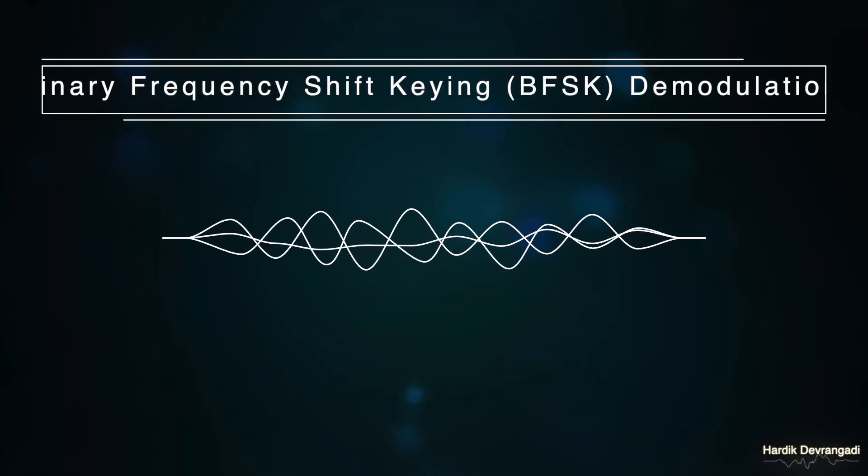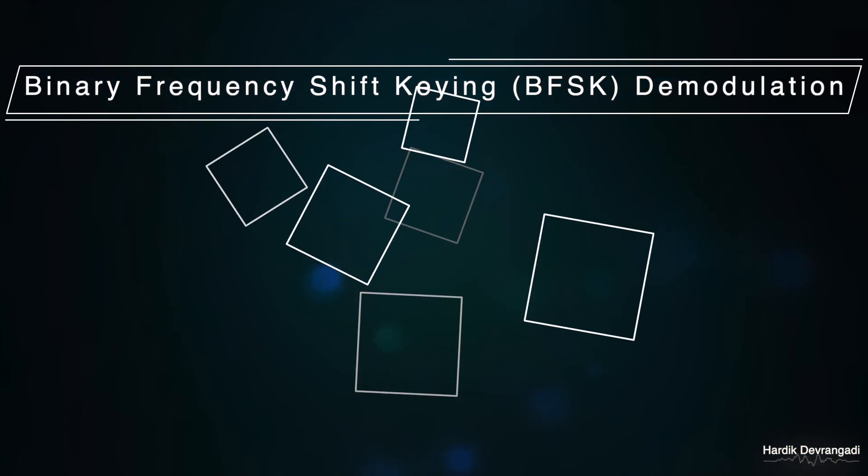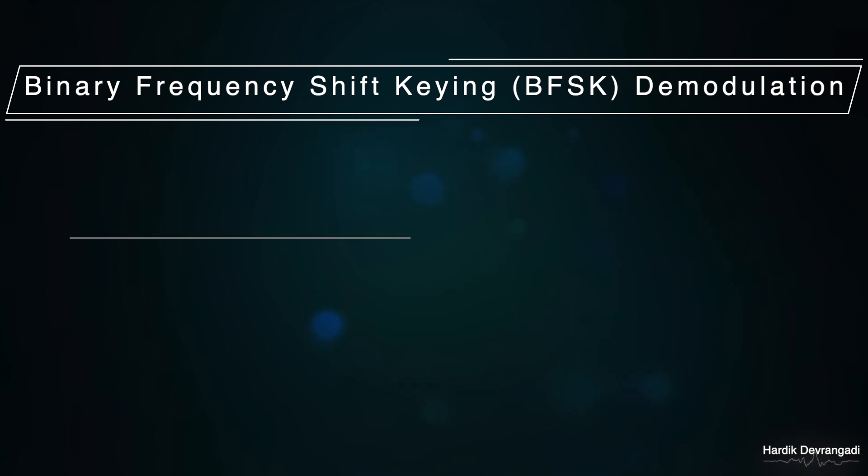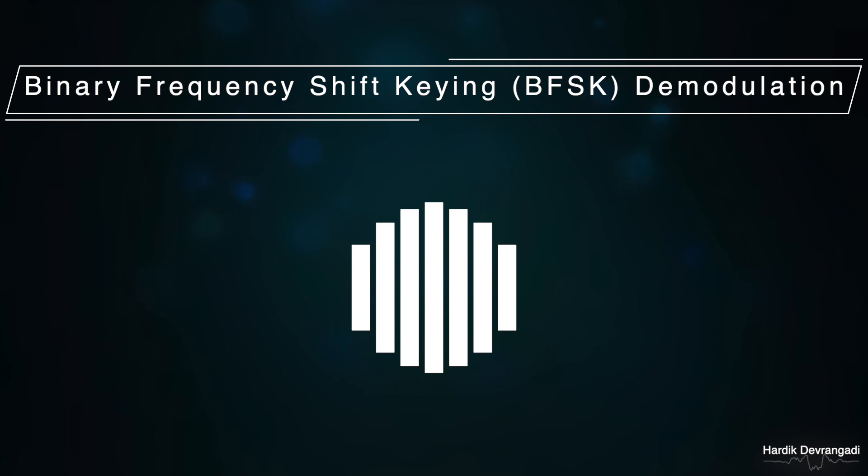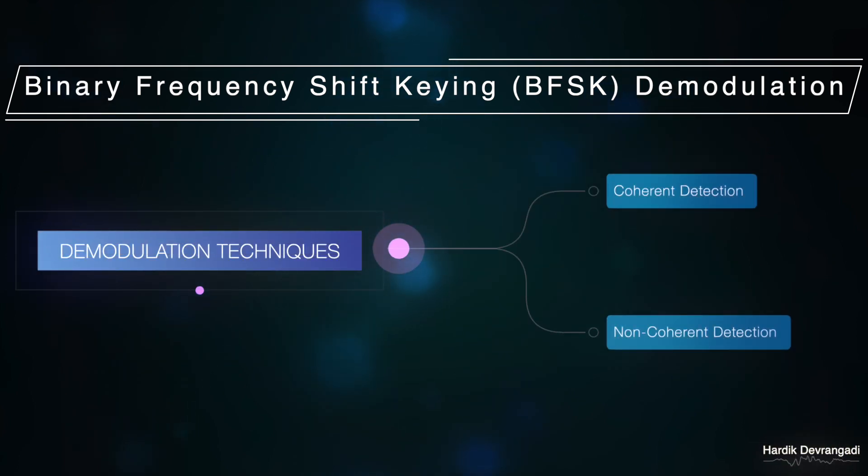Now let's discuss the demodulation of BFSK signal. Why is demodulation required? We require demodulation to convert the modulated signal with noise into an interpretable form to get back the original signal. There are two types of demodulation techniques: coherent detection and non-coherent detection. In coherent detection, the phase, amplitude, and frequency are known. But in case of non-coherent detection, the phase isn't known, whereas the frequency and amplitude are known.